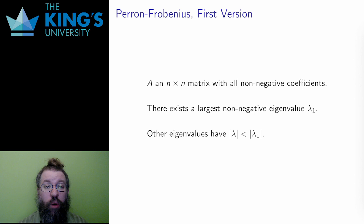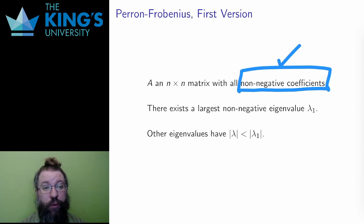In many models, the coefficients of the matrix will be probabilities, transition terms, growth rates, or other positive real numbers. The matrix A will very often be a matrix with all non-negative entries. And there is a powerful theorem that tells us what to expect for the eigenvalues and eigenvectors of such a matrix.